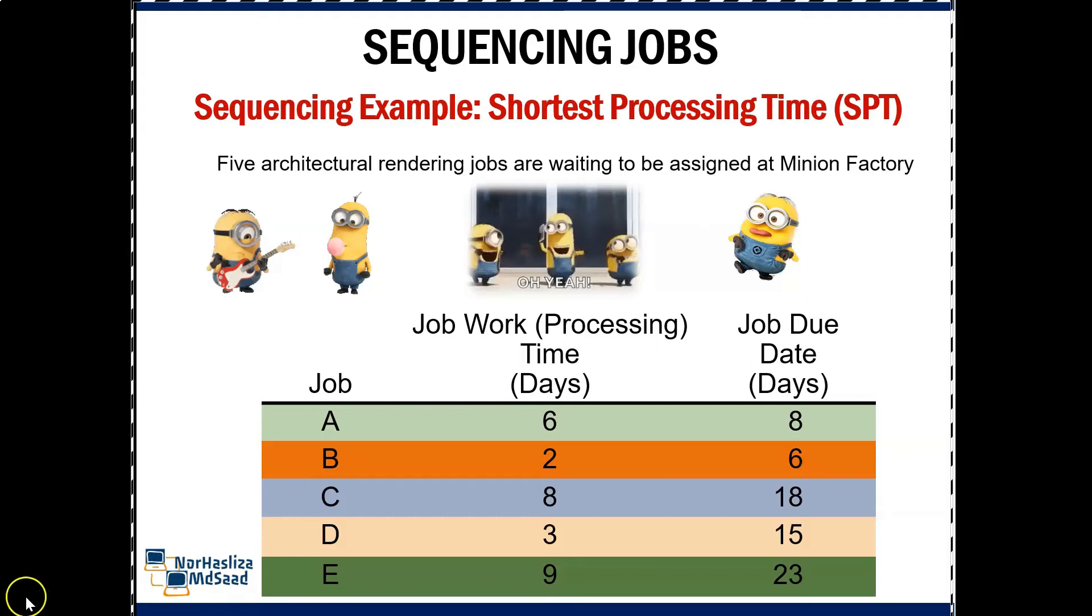The firm wants to determine the sequence of processing according to shortest processing time rules. Jobs will be assigned a letter in the order they arrive: A, B, C, D, and E.